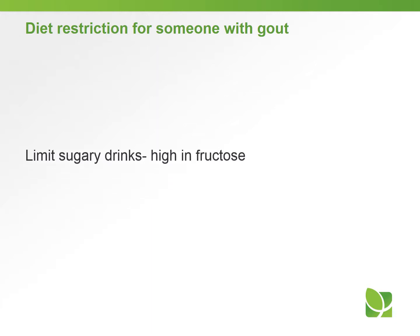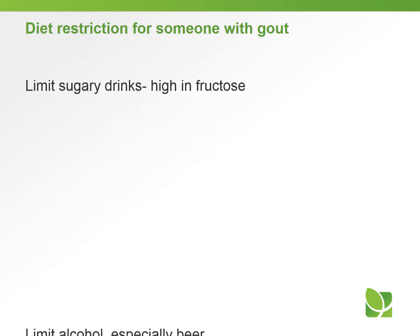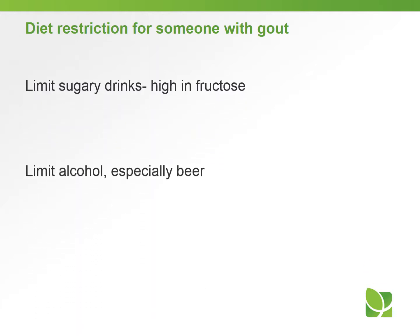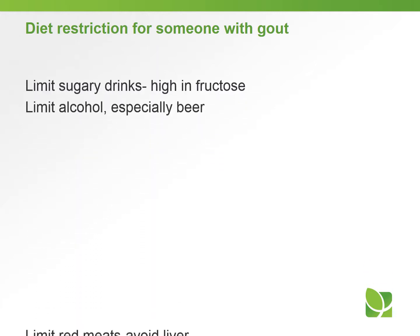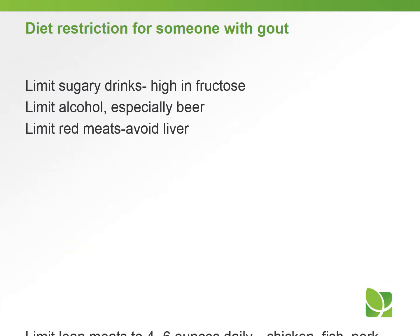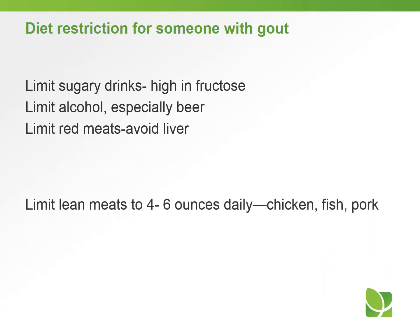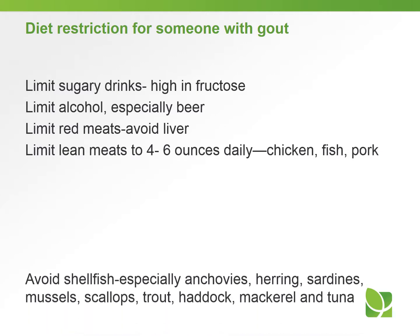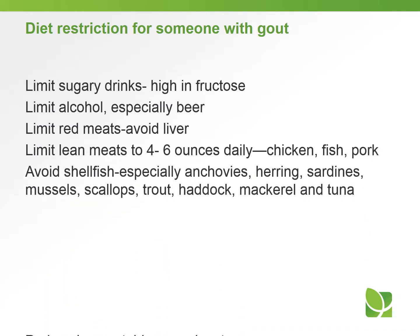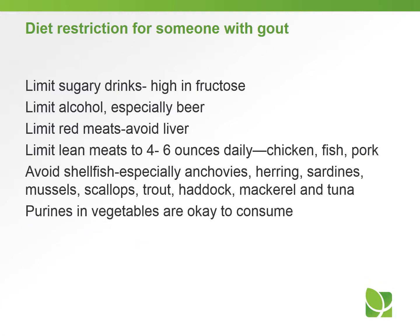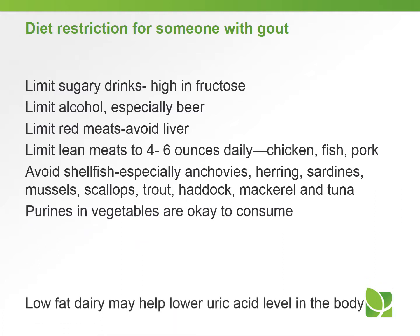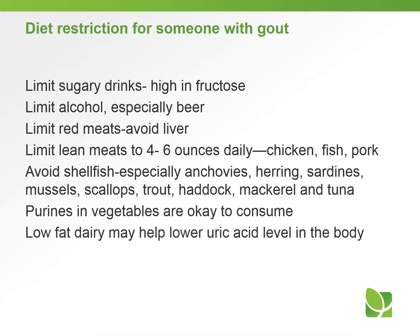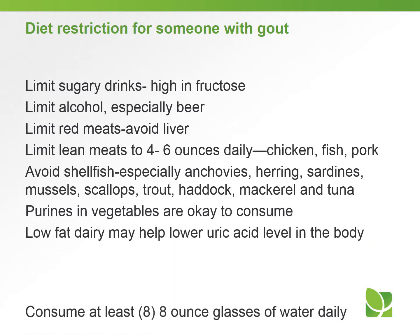Diet restrictions for someone with gout: we would want them to limit sugary drinks, those that are high in fructose. Limit alcohol, especially beer. Limit red meats — in particular, avoid liver. Limit lean meats to four to six ounces daily, such as chicken, fish, and pork. Avoid shellfish, especially anchovies, herring, sardines, mussels, scallops, trout, haddock, mackerel, and tuna.